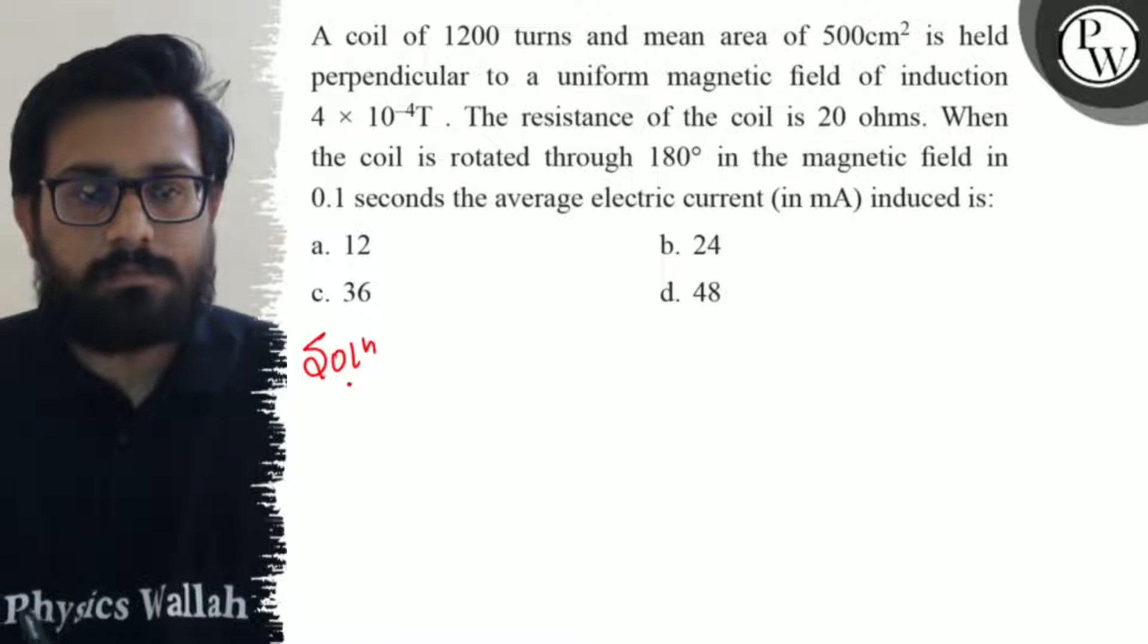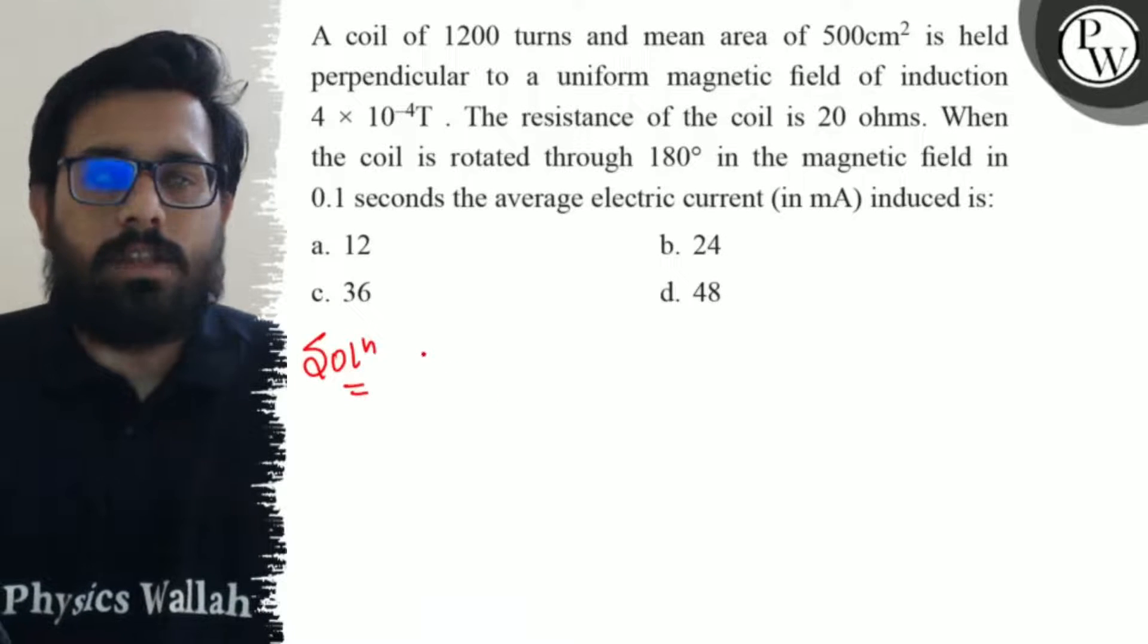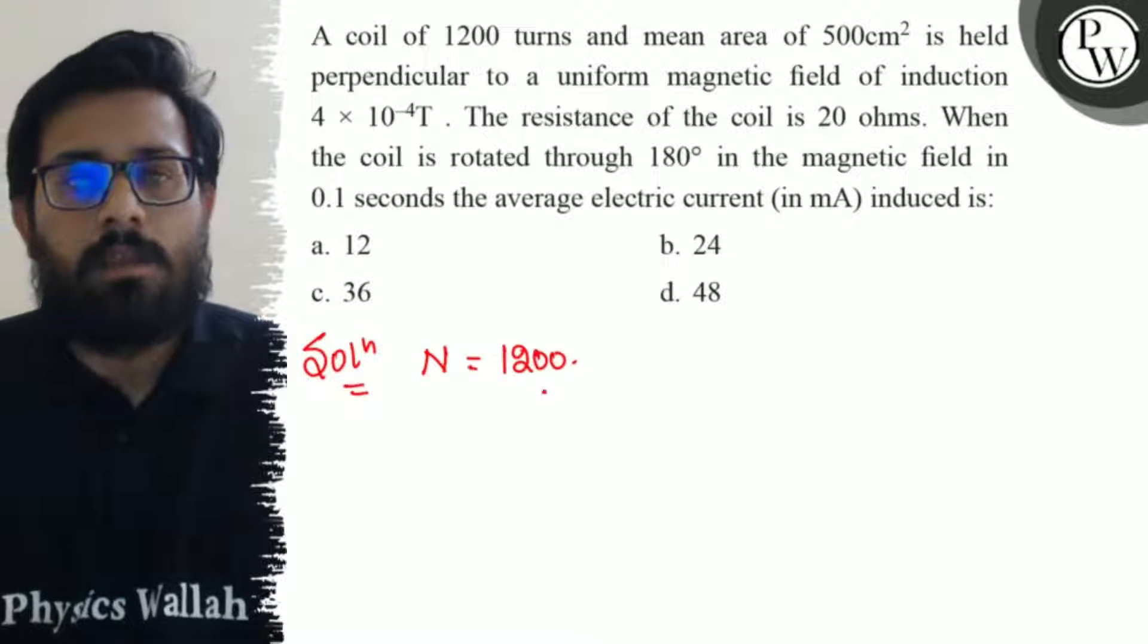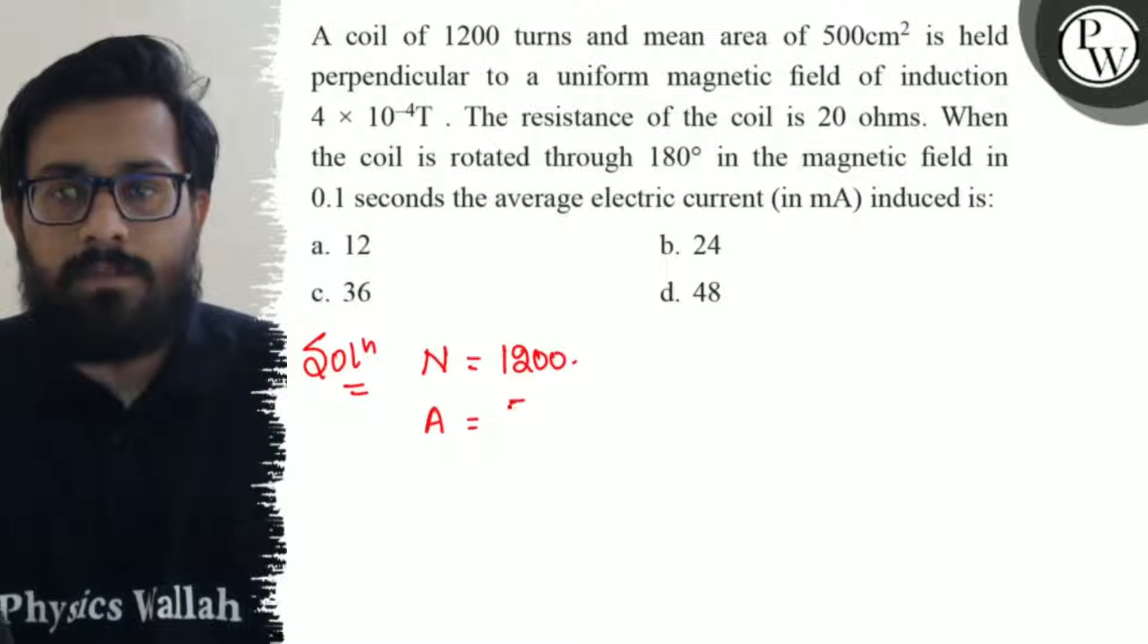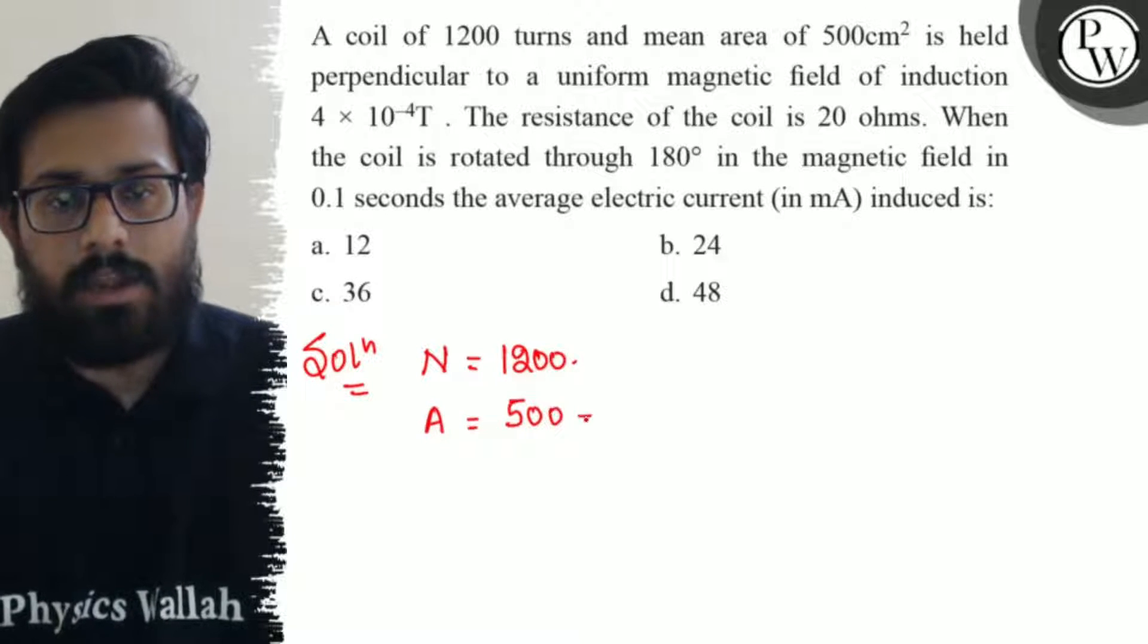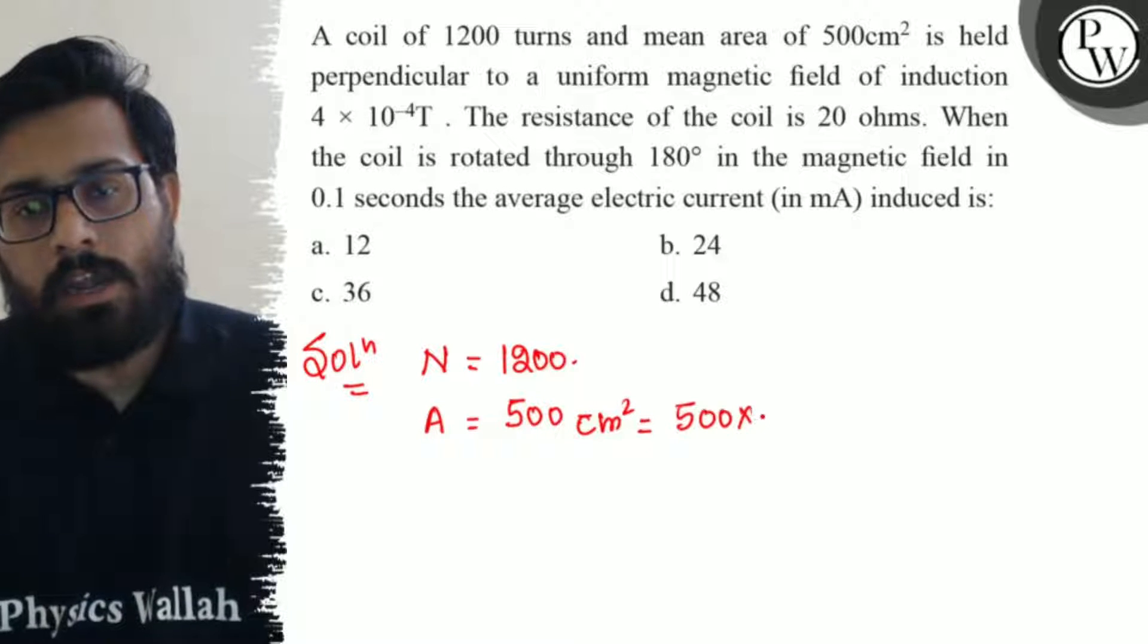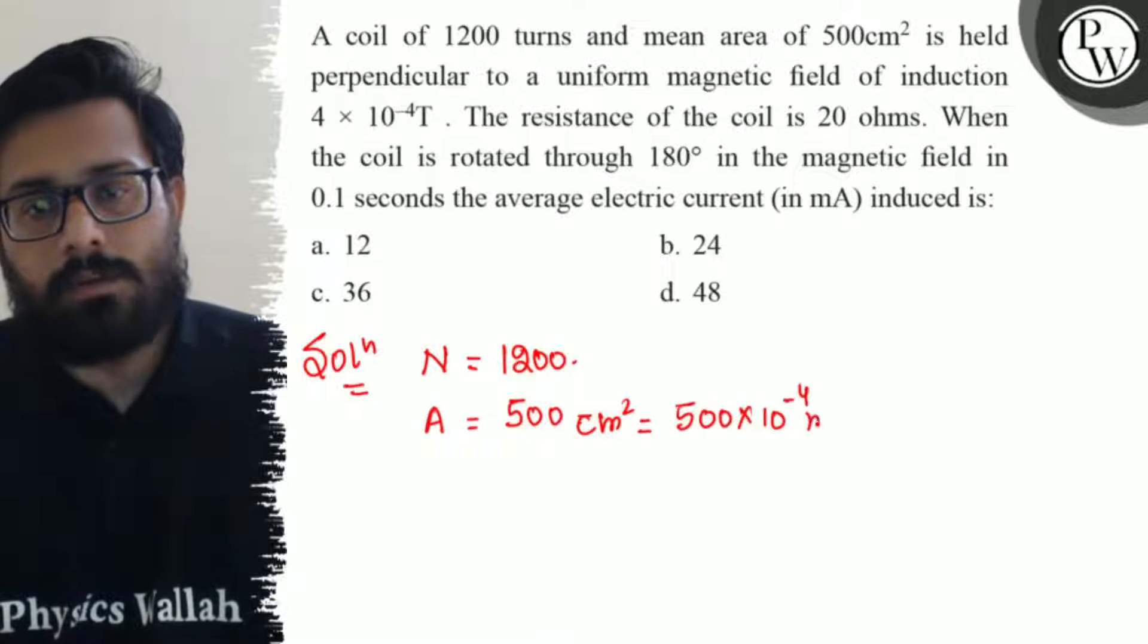So let's see the solution. In this question, what are the given things we have? Number of turns: 1200. Area kitna given hai? 500 cm², converting it into meters, so 500×10⁻⁴ m².